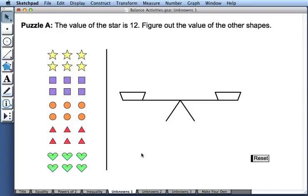In the next activity, which involves solving for unknowns, we're told in our first problem that the value of the star is 12, and we're asked to figure out the value of the other shapes.